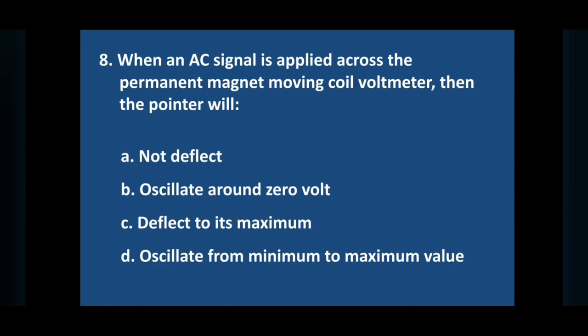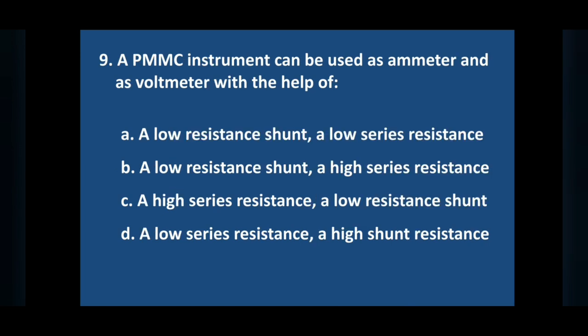Question number eight: when an AC signal is applied across the permanent magnet moving coil voltmeter. Answer is option B, oscillate around zero volt.